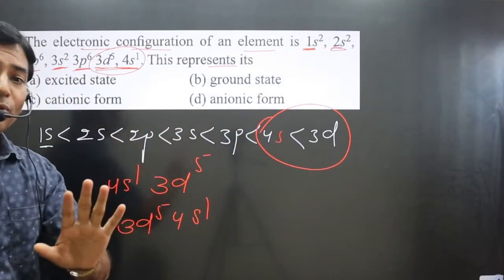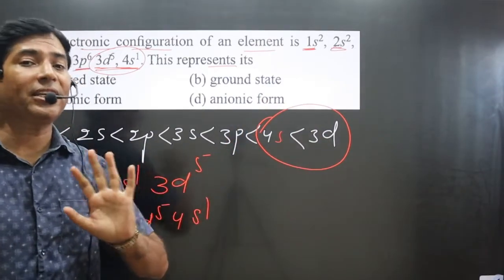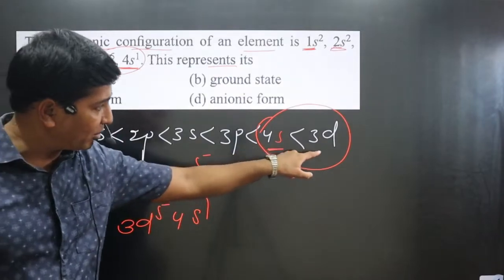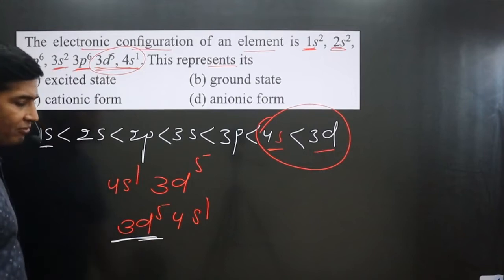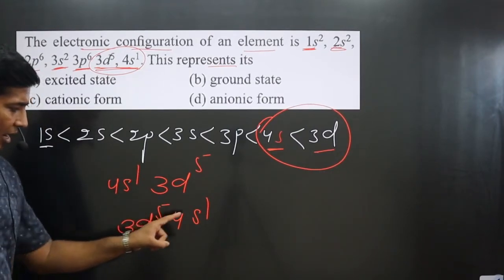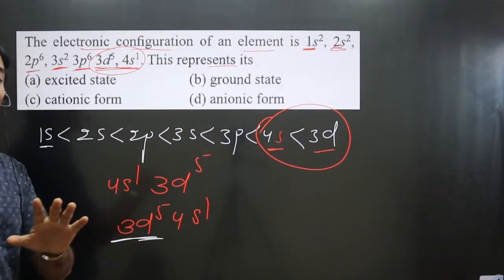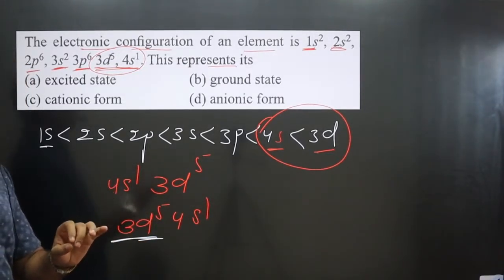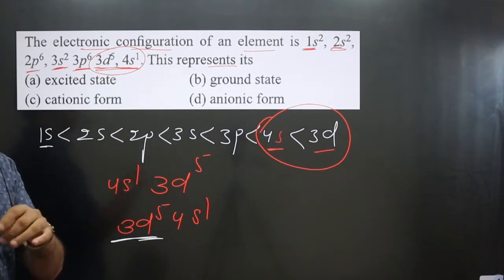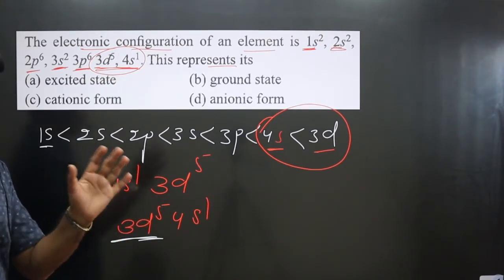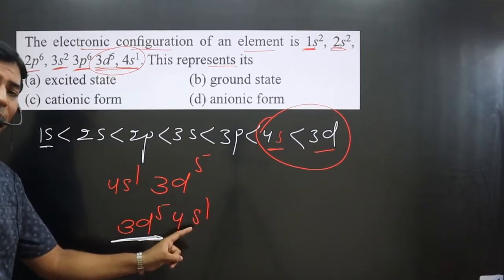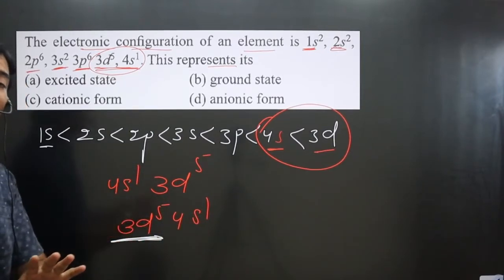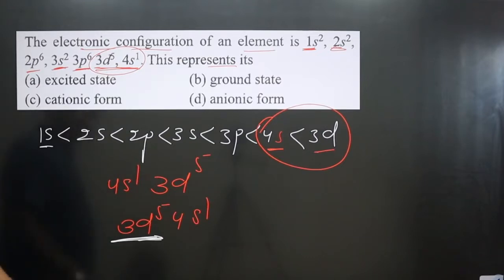Since 3d has higher energy than 4s, the 4s orbital should be completely filled before filling 3d. But in this case, the 3d orbital is half filled. The d orbital may be pulling one electron from the s orbital to be in a stable state, because a half-filled configuration is more stable than a partially filled one.